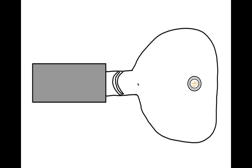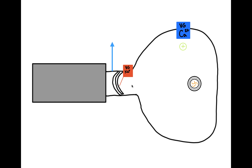Inside the axon, we have voltage-gated sodium channels. As action potentials propagate, voltage-gated sodium channels open, allowing sodium to flow into the cell. The sodium depolarizes the membrane of the synaptic terminal, which opens voltage-gated calcium channels.